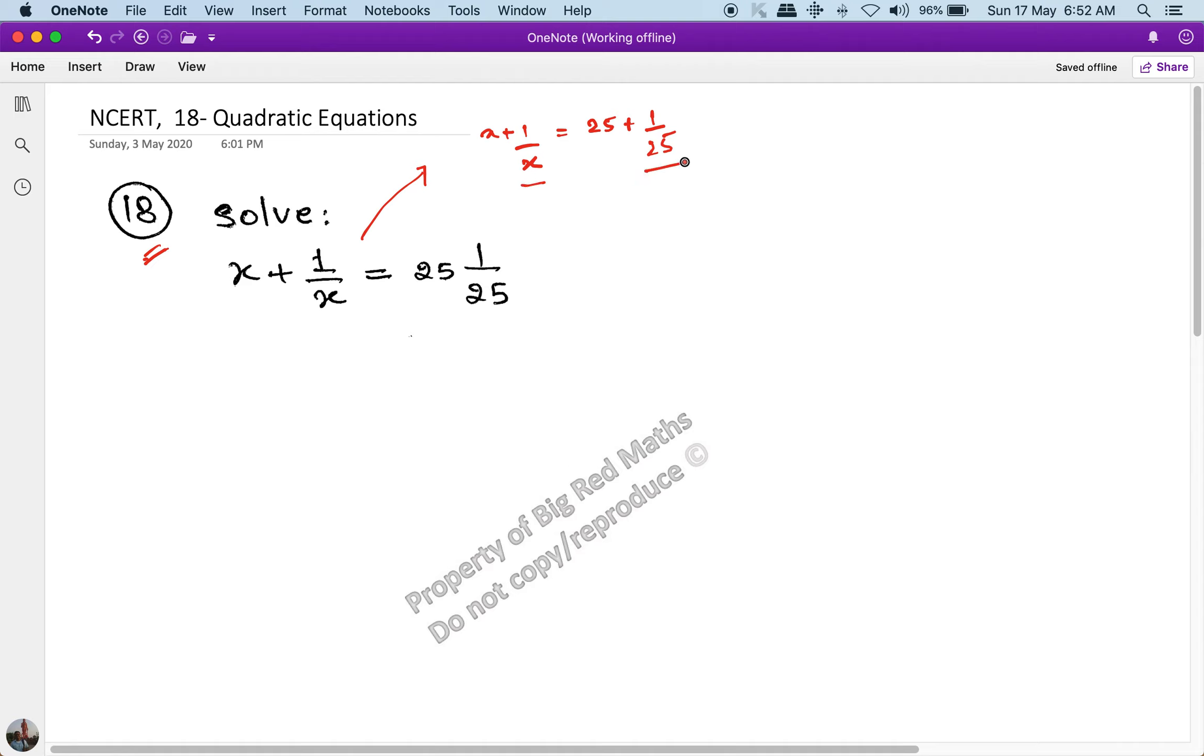Now, let's see, x plus 1 by x is symmetrical. This is LHS and RHS. So, one root is 25. This is true. Okay, one root is 25. This is true. Now, we just need to work out the other root. And since we know that one root is 25, this will help us in factorization.